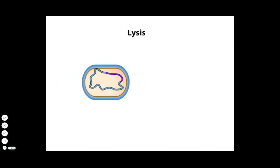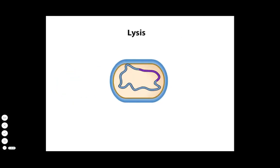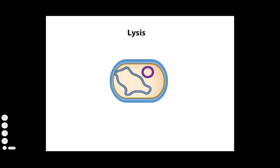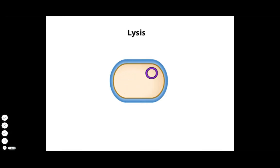At the beginning of the lytic pathway, the phage genome directs its own excision from the host genome. As it exits, it circularizes again. A viral DNA cleaves the host cell's DNA. Using information in the viral genome, the cell synthesizes capsid proteins.